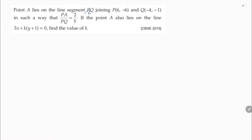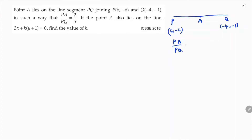Point A lies on the line segment PQ joining P and Q. P is (6, -6) and Q is (-4, -1). The point is A, and they gave PA such that PA by PQ is 2 by 5. So if the total is 5, PA is 2, meaning the remaining part is 3.